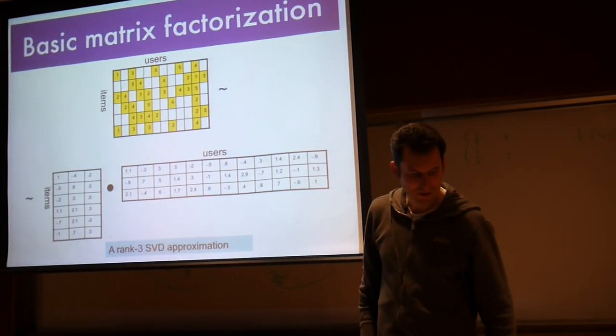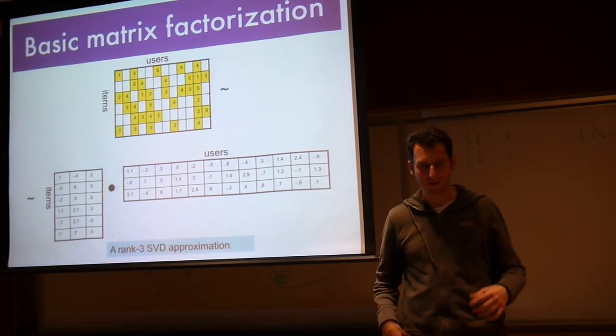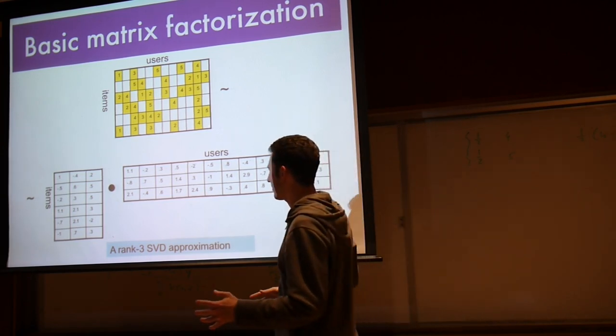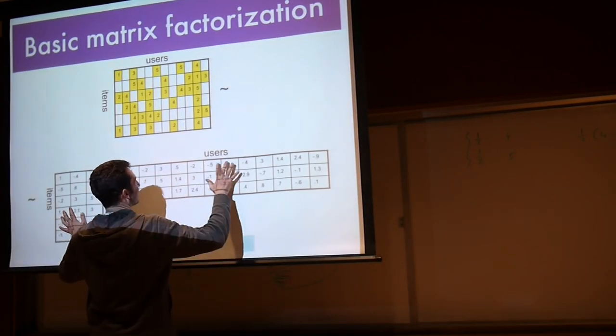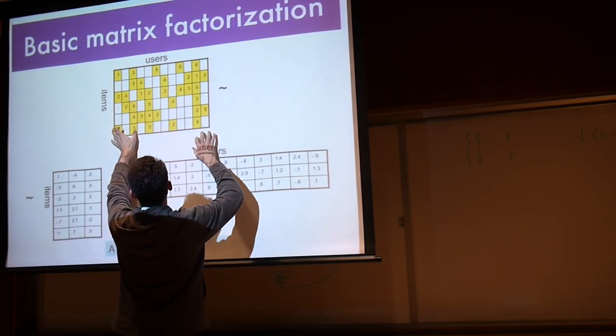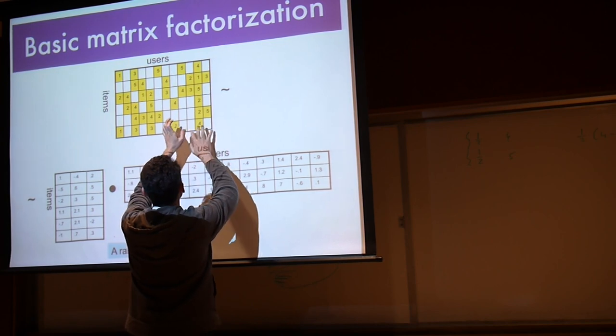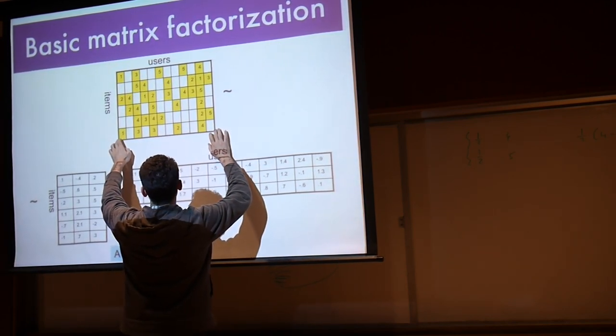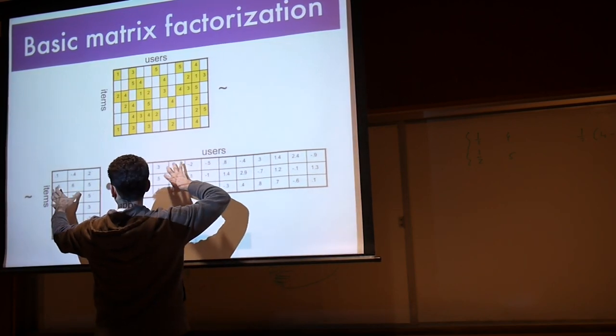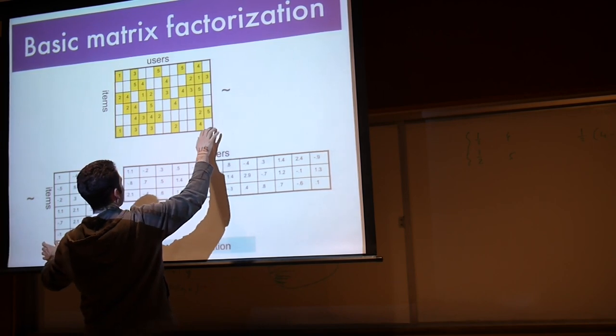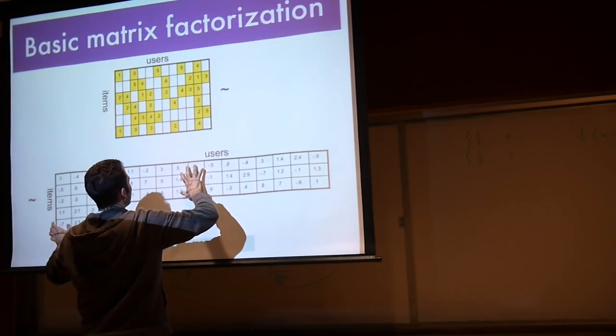Now, here's what you really get. You have this ratings matrix, and you want to stratify it by factors about items and about users. This is a 6 by 15 matrix, and we're trying to approximate it by a rank 3 object. This clearly looks like it's going to be an approximation.